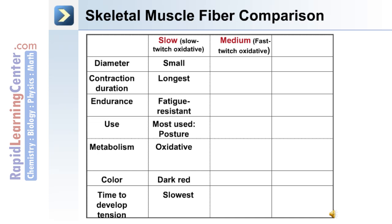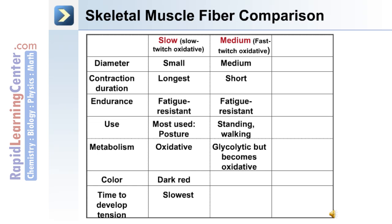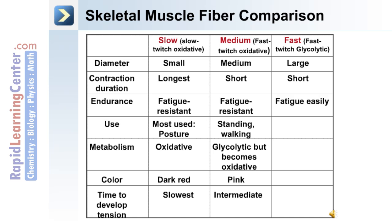Medium or fast twitch oxidative fibers are medium diameter fibers with short contraction duration. These are also fatigue-resistant and used for standing and walking. They use glycolytic metabolism that becomes oxidative, their color is pink, and they have an intermediate time to develop tension. The third type, fast or fast twitch glycolytic fibers, have the largest diameter and a short contraction duration. These fibers fatigue easily, are used for explosive movements such as jumping, their metabolism is glycolytic, their color is white, and they have the fastest time to develop tension.